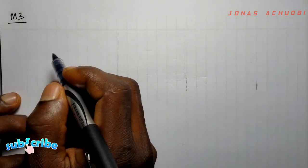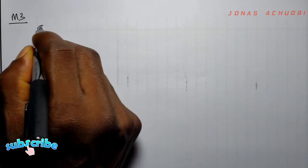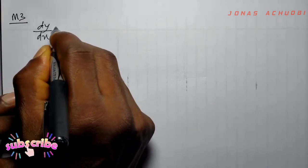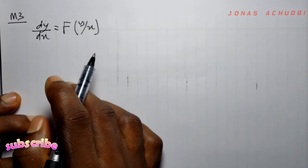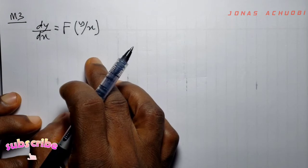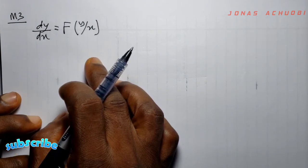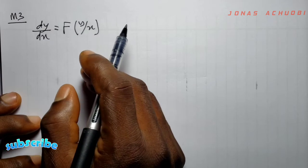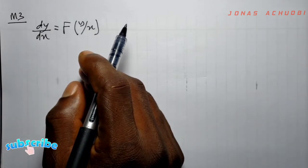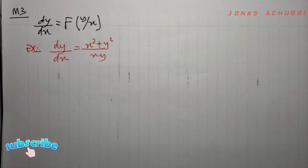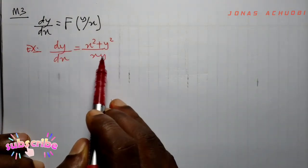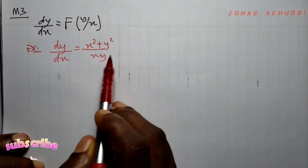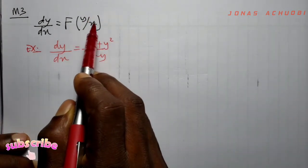The third way of checking if a given first-order ODE is homogeneous is if the right-hand side can be written as some function of y/x. If we are able to express the right-hand side of such an ODE in that form, we conclude that the ODE is indeed homogeneous. Let us take an example: dy/dx = (x² + y²) / (xy).